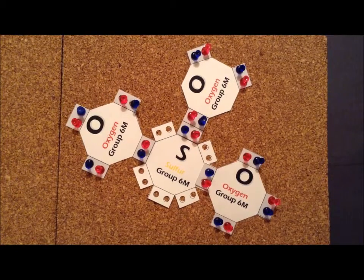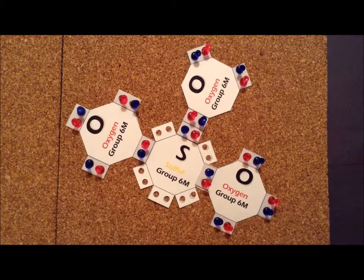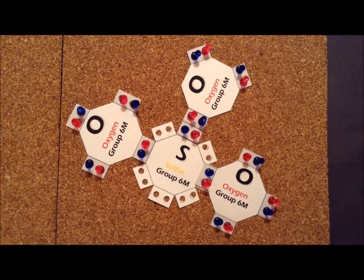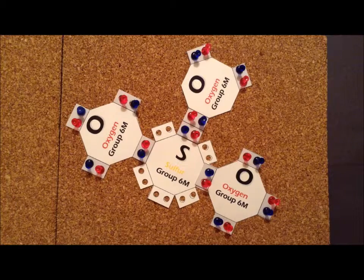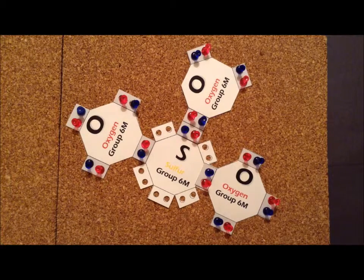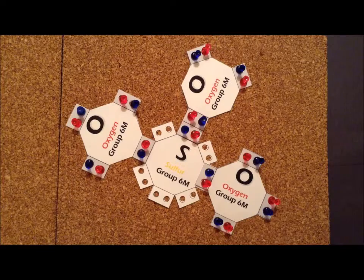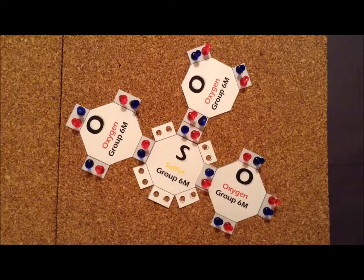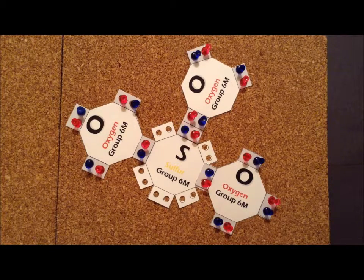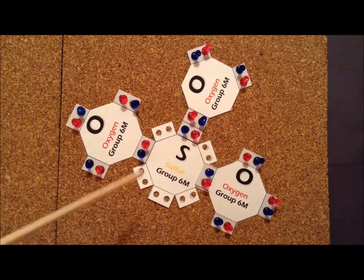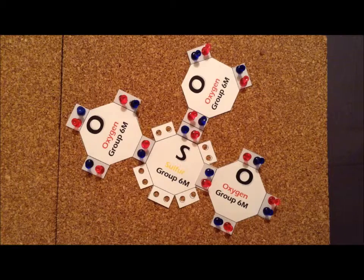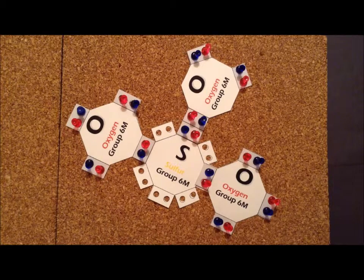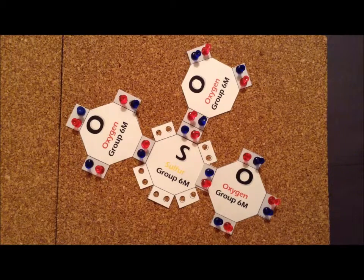If we react sulfur dioxide with oxygen, particularly in the presence of a catalyst, we can create a new gas, sulfur trioxide, SO3. To make the Lewis structure for this compound, we need six valence electrons for the sulfur, six valence electrons for each oxygen atom, which gives us a total of 24 valence electrons.